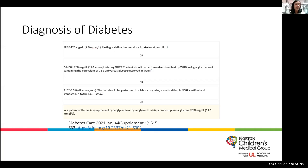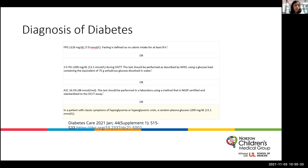A two-hour postprandial glucose of 200 mg/dL during an oral glucose tolerance test — performed per WHO guidelines using a glucose load of 1.75 grams per kilo to a max of 75 grams dissolved in water — also meets criteria. A hemoglobin A1C of greater than or equal to 6.5% is another diagnostic option, though A1C assays can be inaccurate, especially early in evolving diabetes. Tests should be performed in a laboratory setting using a certified and standardized method.